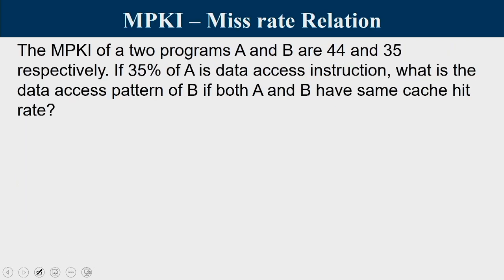The next question involves MPKI — misses per kilo instruction — an important characteristic measuring how many cache misses occur per 1000 instructions executed. The MPKI of programs A and B are 44 and 35 respectively. This means executing 1000 instructions of A produces 44 misses (in I-cache and D-cache), while B produces 35 misses. MPKI of B is less than that of A.